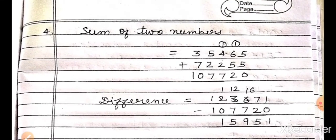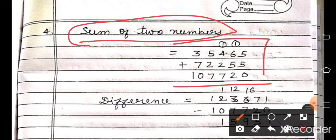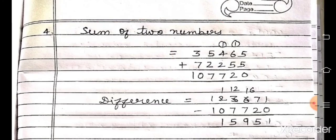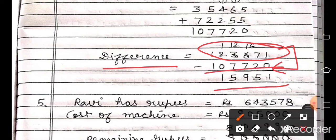Now question number 4: By how much is 1,23,671 greater than the sum of 35,465 and 72,255? First find the sum of the two given numbers, then find the difference. Subtract the sum of both numbers from the given number — the answer is 15,951.